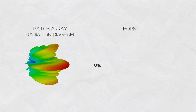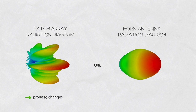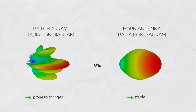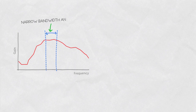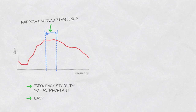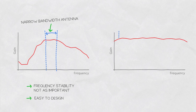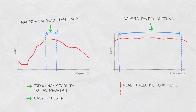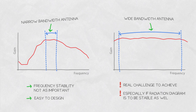Some antennas, like patch arrays, are more prone to these design changes, while others, like horn antennas, are much more stable. So why is stability of gain and radiation diagrams important? Again, it depends. Some antennas are used in a narrow bandwidth, so frequency stability is not as important. Because most common antennas have stable performance over narrow frequency ranges, it is fairly easy to design a narrow band antenna. To achieve stable performance over a wide bandwidth is a real challenge, especially if you want an antenna that has a stable peak gain and a stable radiation diagram simultaneously.